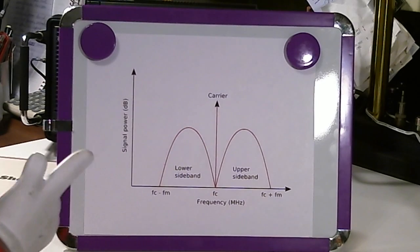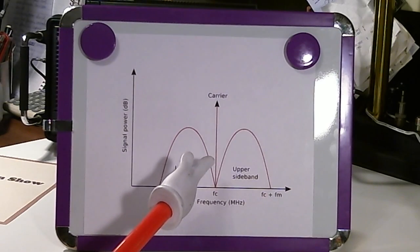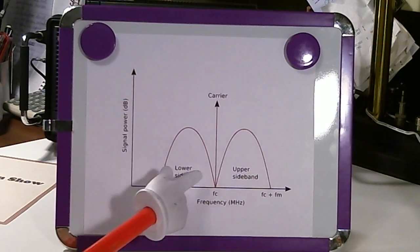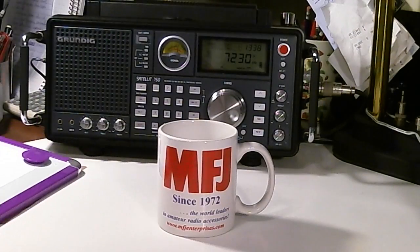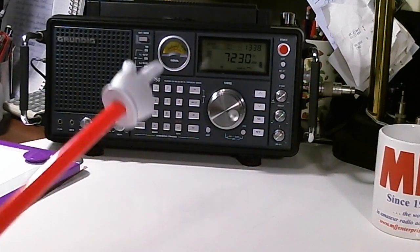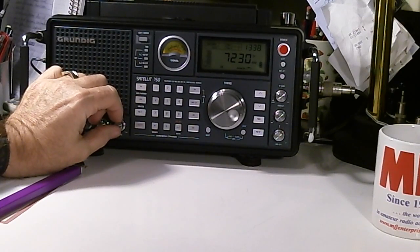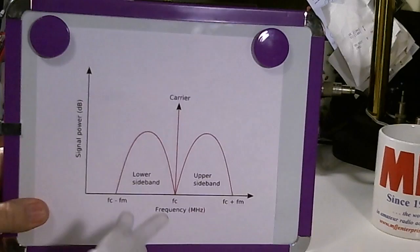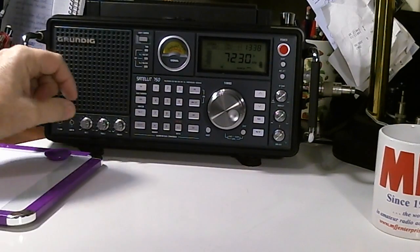Shortwave radios with single sideband capability have extra circuitry that puts the carrier back in and lets you select either upper or lower sideband. Let's try tuning a single sideband signal on my Grundig 750, which has a circuit called a BFO — a beat frequency oscillator. That beat frequency oscillator puts the missing carrier back into the signal we're receiving.